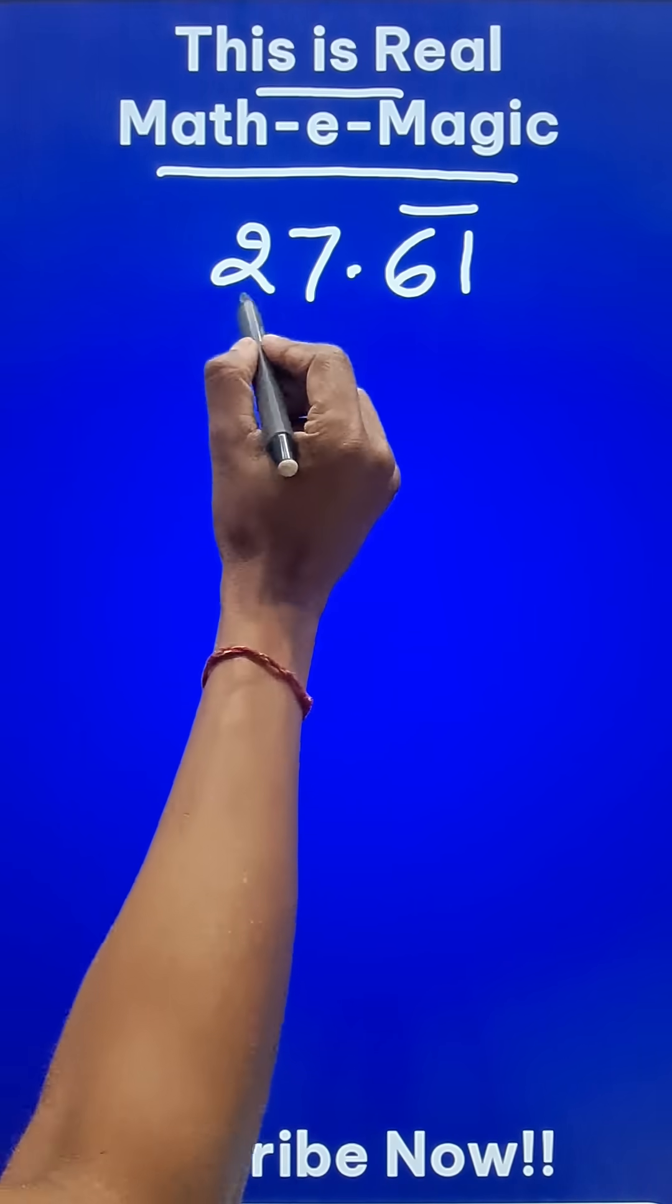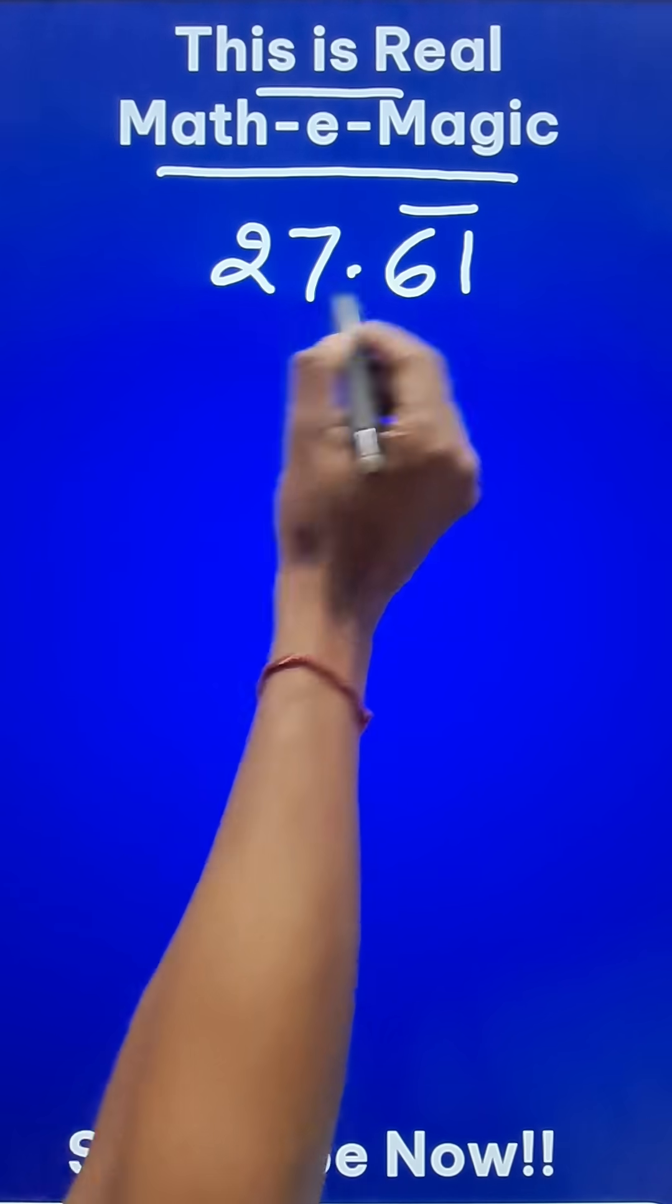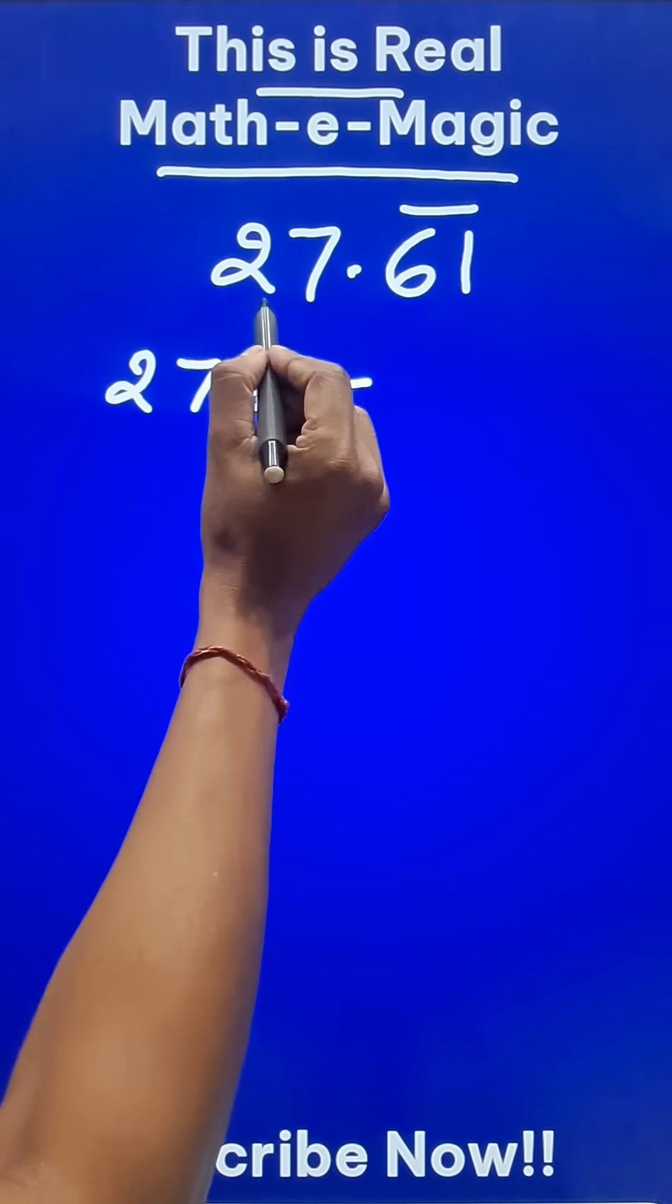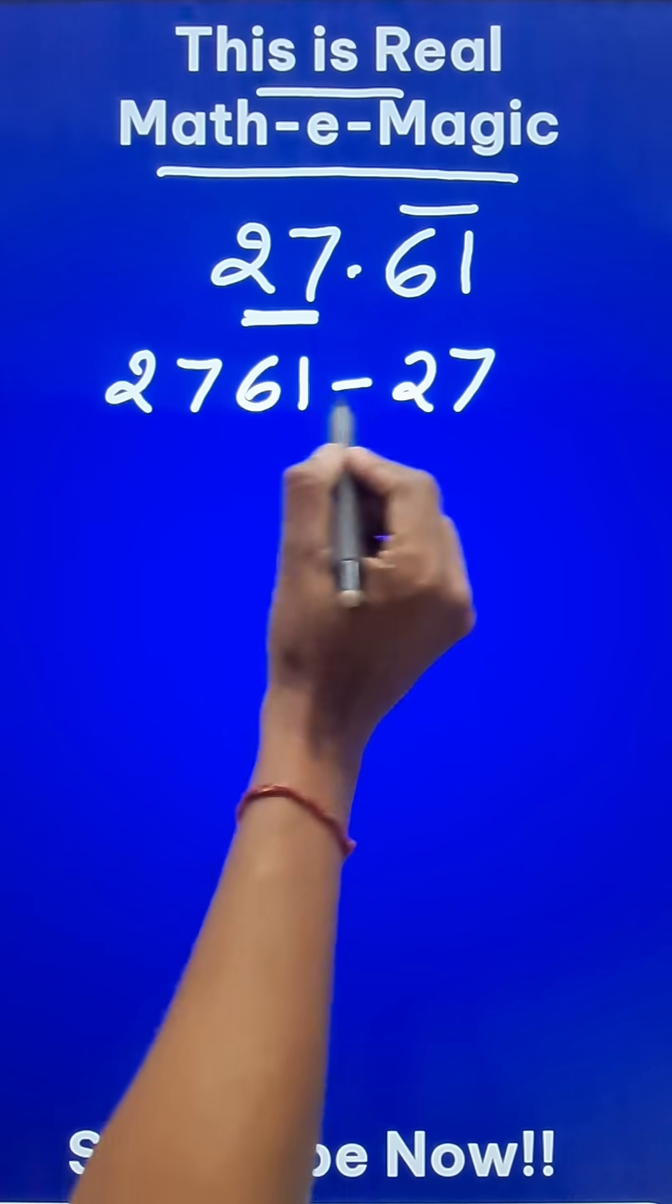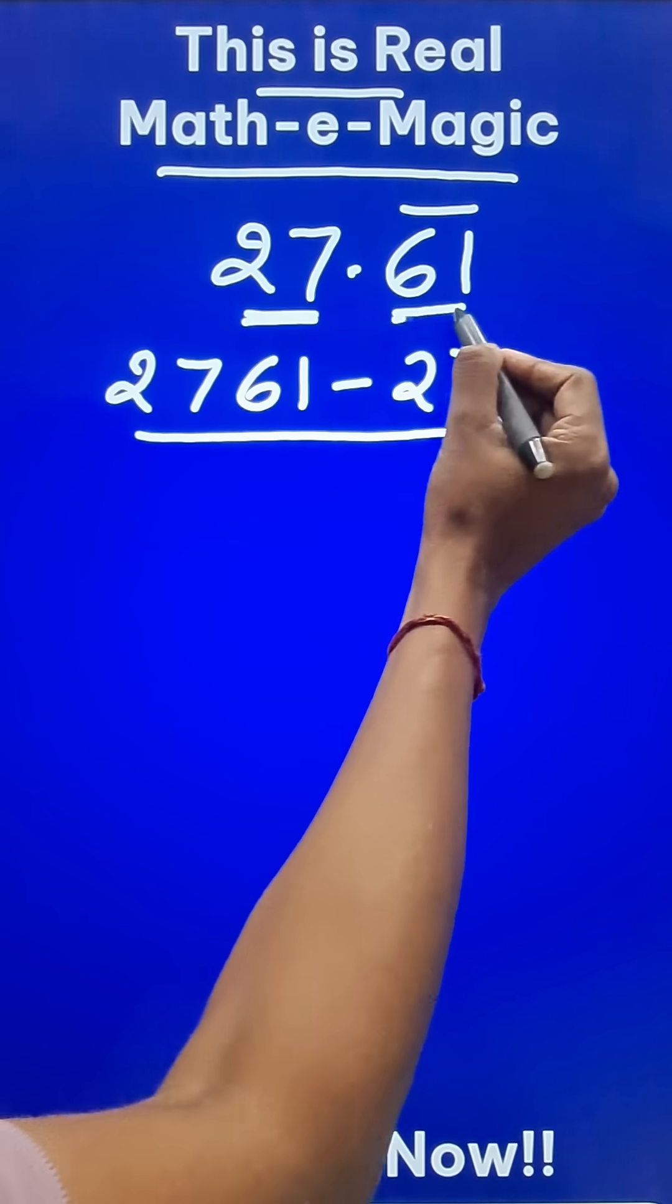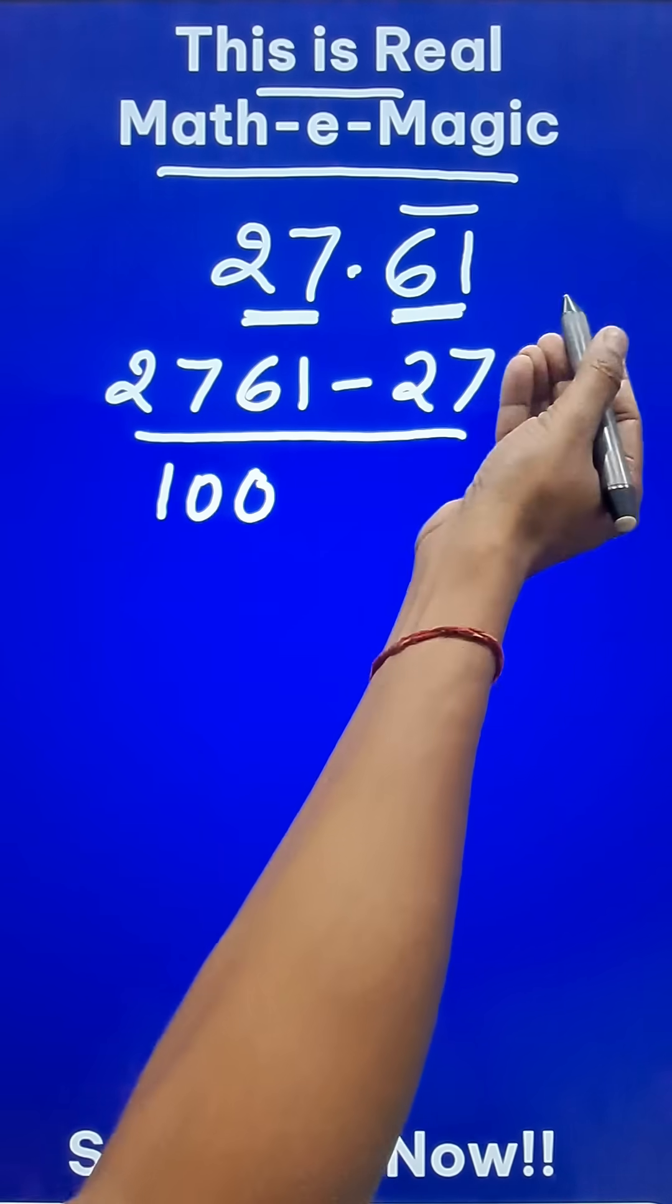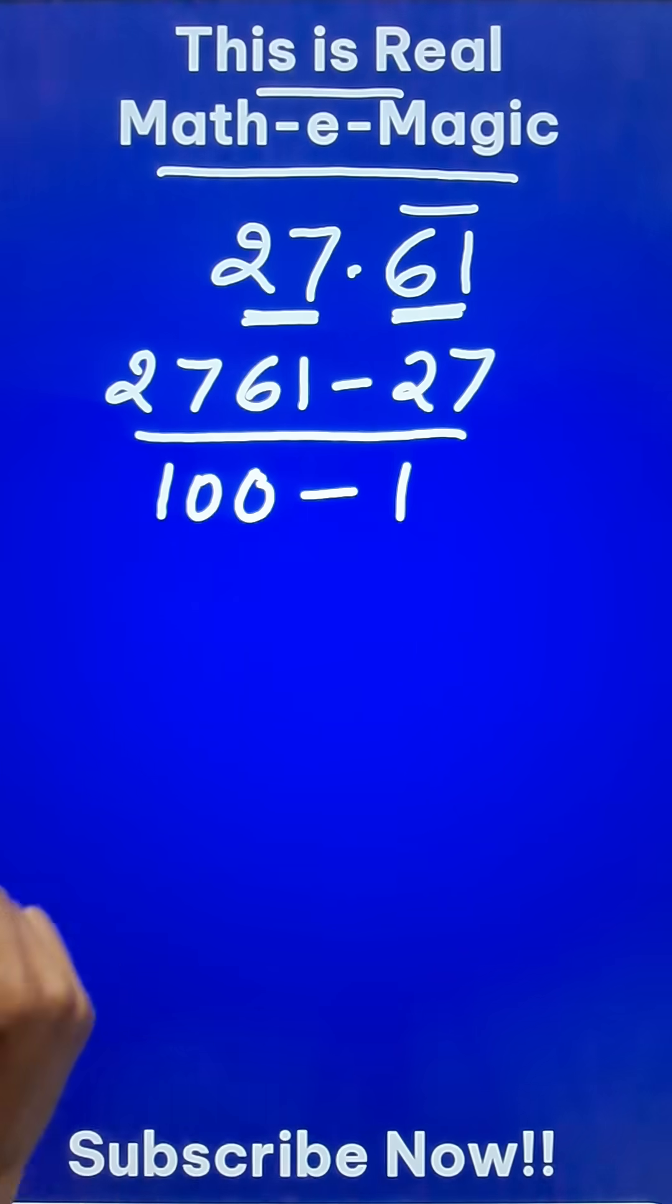So in this case, take the full number like 2761, then subtract the number which is before decimal, like 27 here. In the denominator, since we have two digits which are repeating, take 100. If three digits are repeating, you have to take 1000 and so on, and subtract 1 from this.